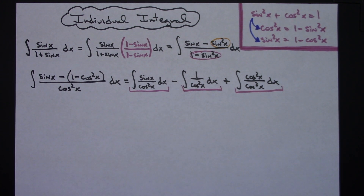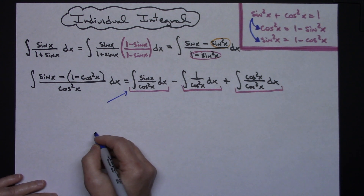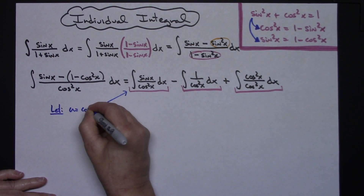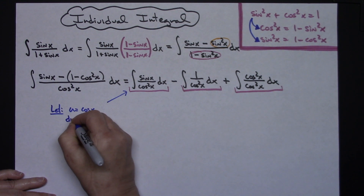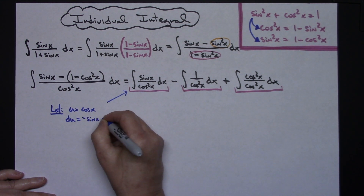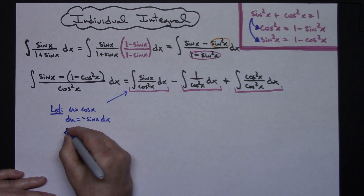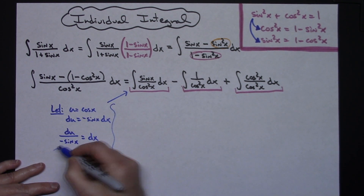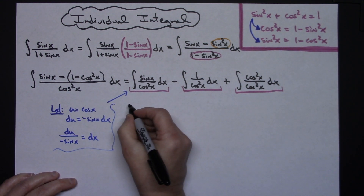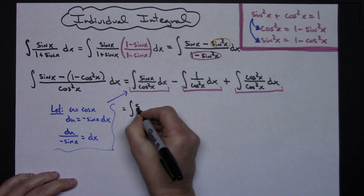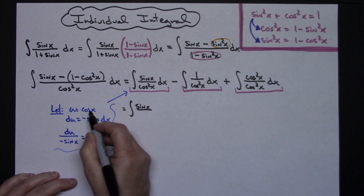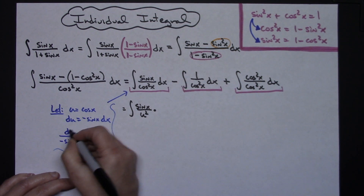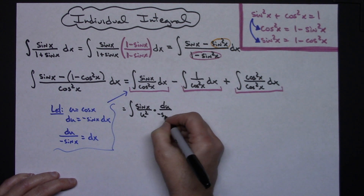The first integral is the only one I'll have to use a u-substitution on. The second, 1 over cosine squared x, is going to be secant squared x, which we can integrate easily. The third, cosine squared x over cosine squared x, simplifies down to 1. For the u-substitution on the first integral: we let u equal cosine x, then du equals negative sine x dx. Solving for dx gives du over negative sine x.